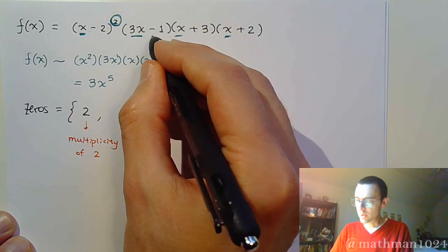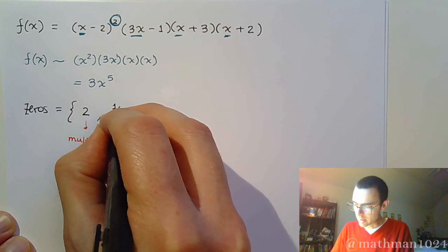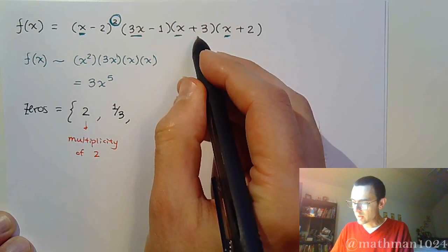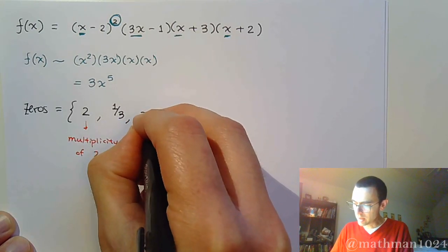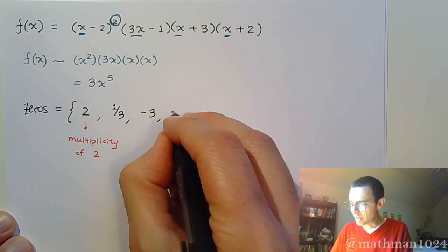If I solve this guy equal to 0, I would get 1 third. This guy equal to 0 gives me negative 3, and this guy gives me negative 2.